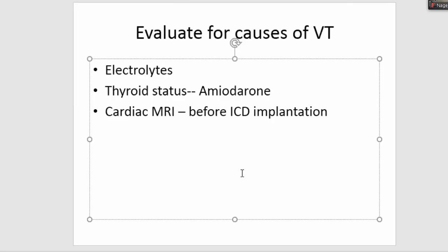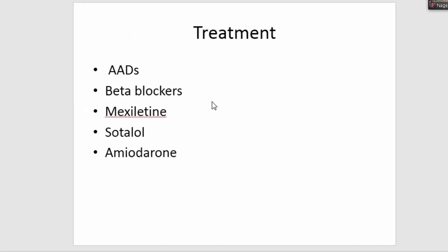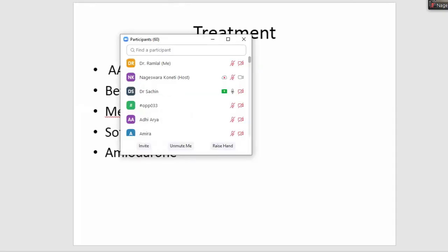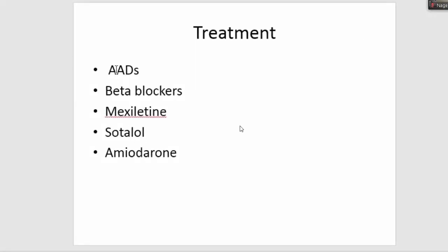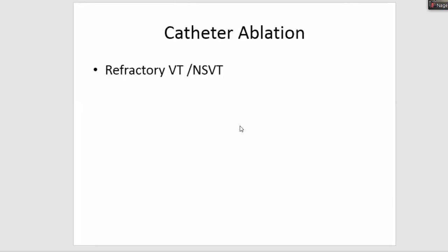Even if MRI is done after ICD placement — since modern ICDs are MRI-compatible — the device creates significant artifacts making MRI interpretation difficult. For management, the most proven treatment for heart failure mortality prevention is beta blockers. Second are ACE inhibitors, ARBs, or ARNIs — optimize these medications. Newer options include sodium-channel blockers like cenobamate available in India. The next choice is sotalol, then amiodarone. Before starting sotalol, ensure electrolytes and QT interval are normal. If all treatments fail, catheter ablation significantly improves quality of life.